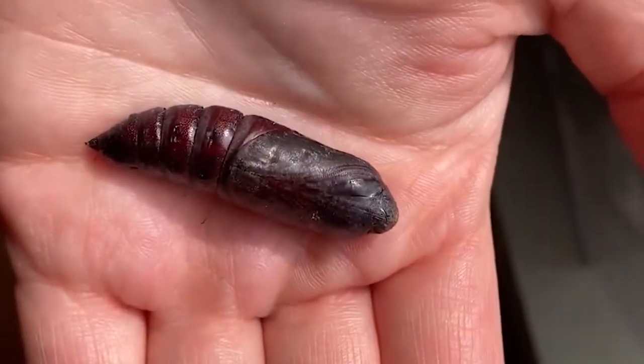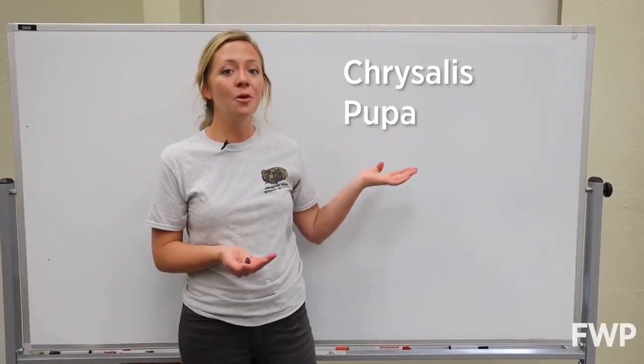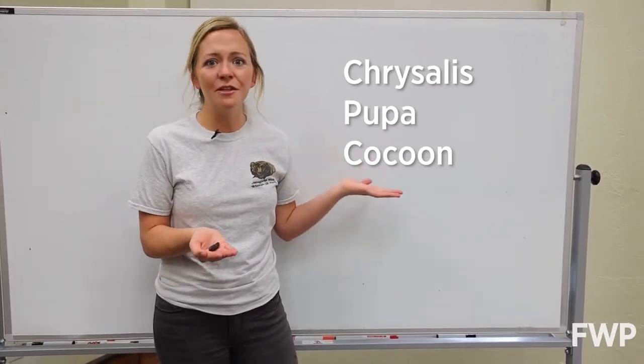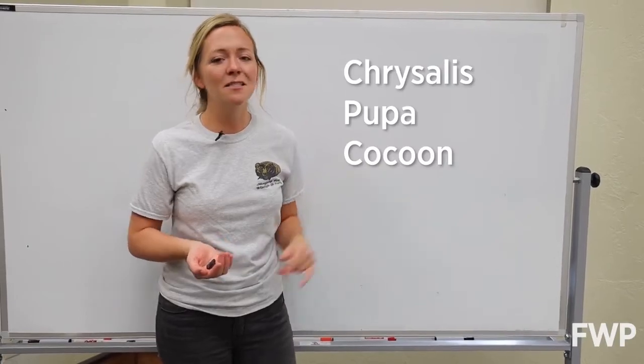the three things they guessed were a chrysalis, a pupa, and a cocoon. So which one is it and what is the difference between these three things? Let's break it down.